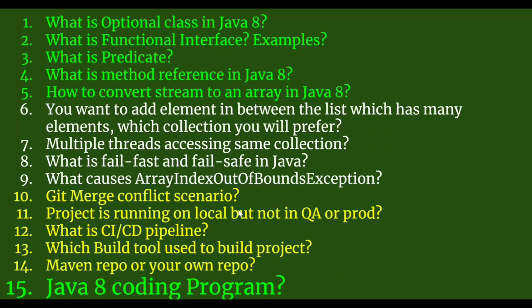What is a functional interface? A functional interface is an interface which has only one abstract method, and that interface is generally annotated with @FunctionalInterface. There are various functional interfaces in Java 8 — for example, Runnable is a functional interface, Predicate is a functional interface. In essence, it has one abstract method and there can be multiple default methods in a functional interface.